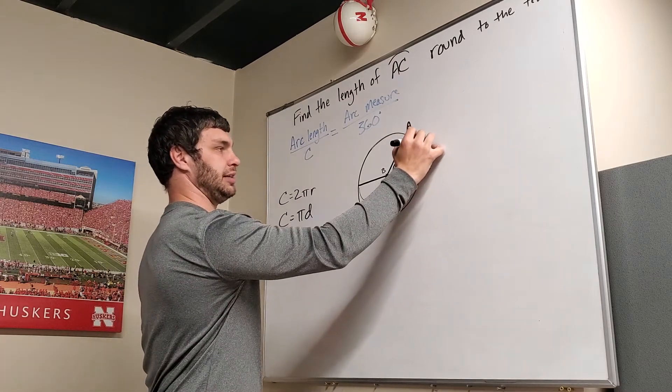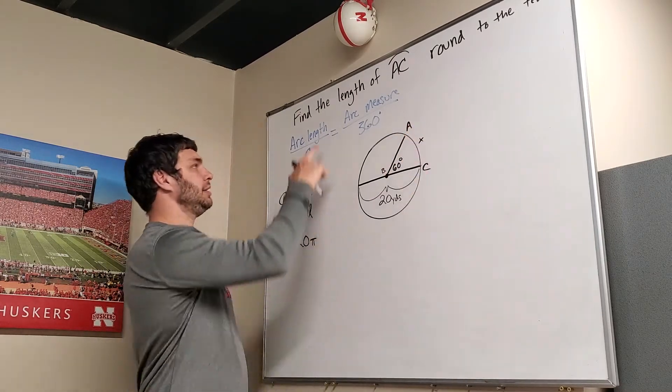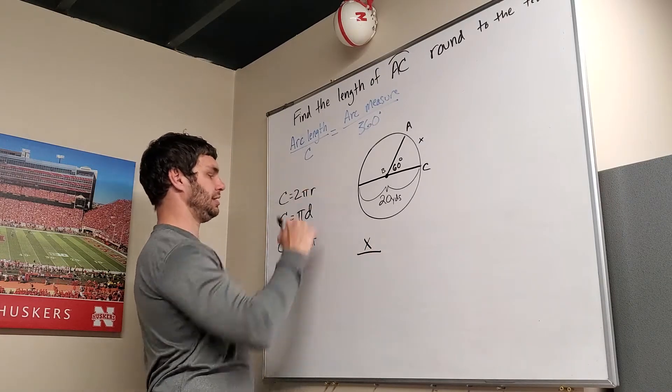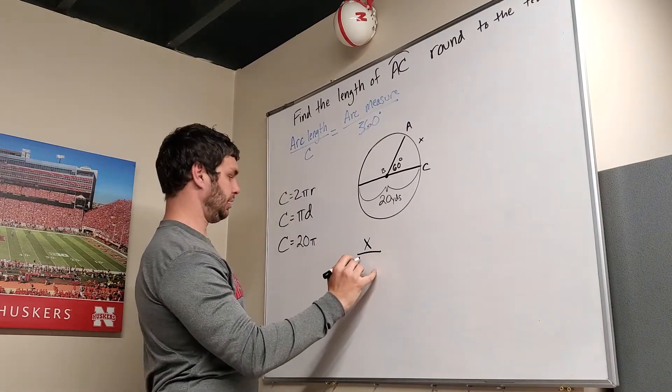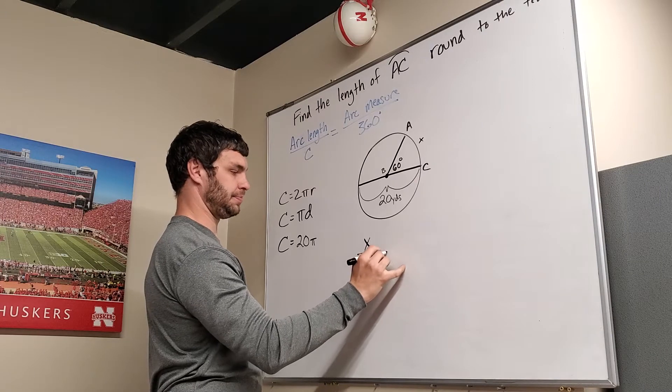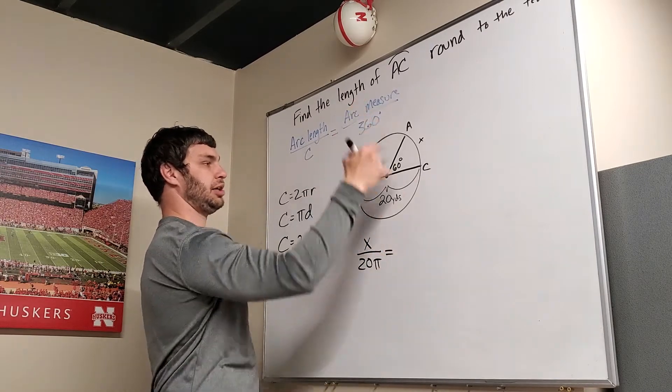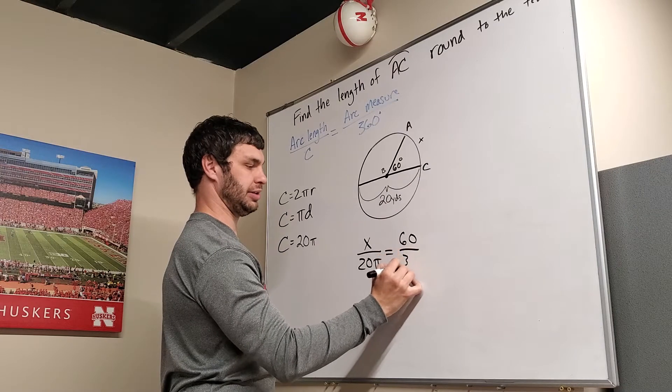Now, I don't know this length here. That's what I'm trying to find. I'm going to call it x. We're going to say x over the circumference for this, we get 20 pi, equals, and then the arc measure is going to be 60 degrees over 360.